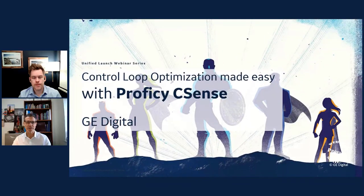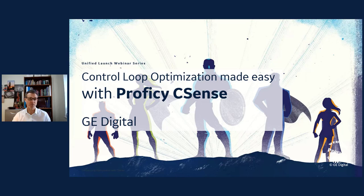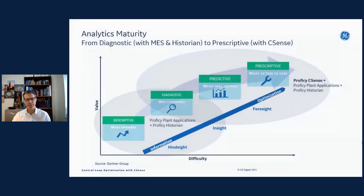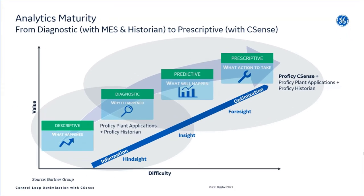Thank you, Justin. Hi everyone and welcome. It's fantastic to spend time with you today to show you more about how Prophecy CSense can make control loop optimization really easy. Let's start with an overview — a reminder of what Prophecy CSense is. When we talk about CSense, it is in the context of industrial analytics. This is a well-known industrial analytics maturity model from the analyst group Gartner, where they think of the analytics landscape in four categories: from descriptive analytics to diagnostic, to predictive, to prescriptive.